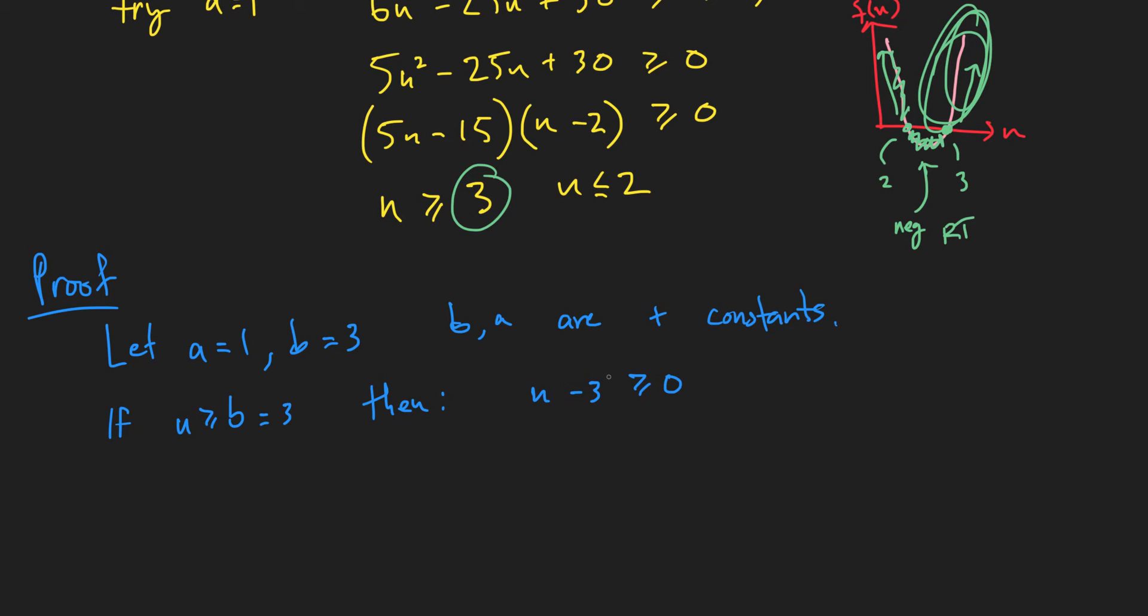So we know that, and if that's true, then if we multiply everything, this whole equation by 5, then this is true. Then we have 5n minus 15 is greater than or equal to 0. Those things should hold.